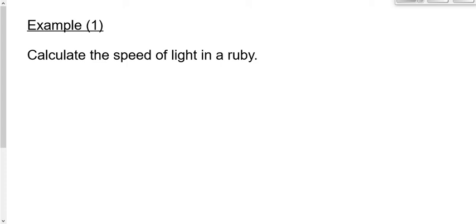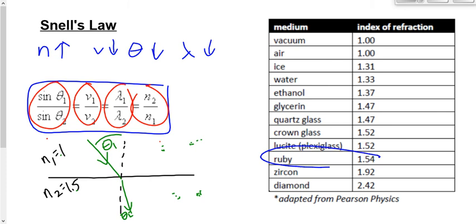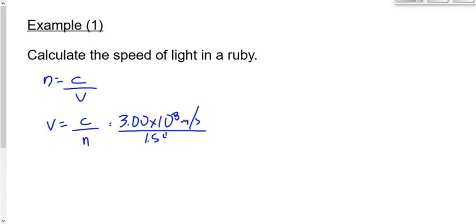Let's look at example number one: calculate the speed of light in a ruby. There are two ways to tackle this. The easiest way is to use the definition of index of refraction: N = C/V. Rearranging to solve for V gives V = C/N. C is 3.00 times 10 to the 8. The index of refraction of ruby from the table is 1.54. Doing the math gives the speed of light in ruby as 1.95 times 10 to the 8 meters per second.